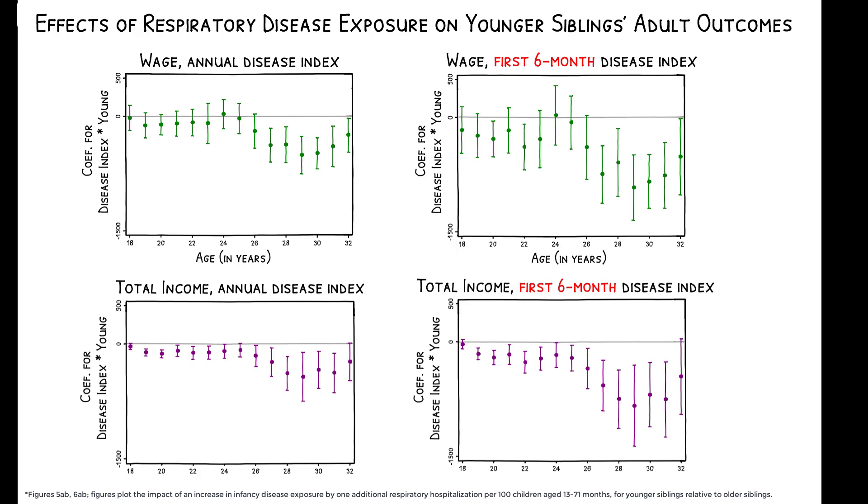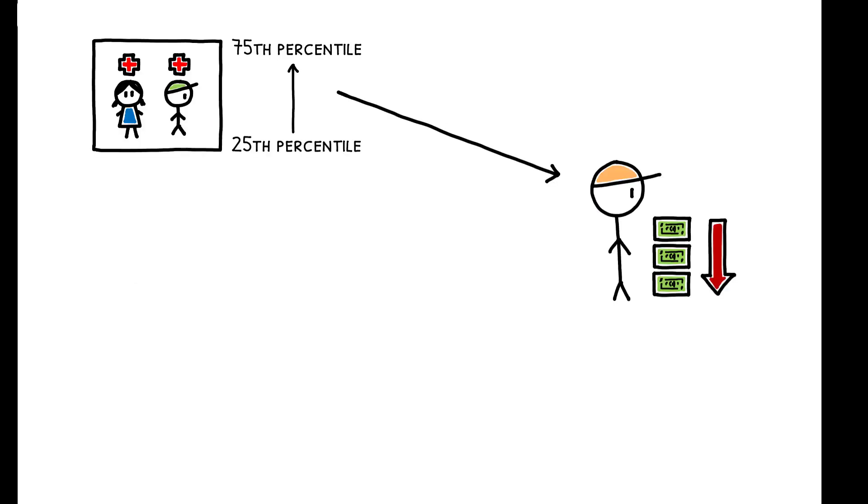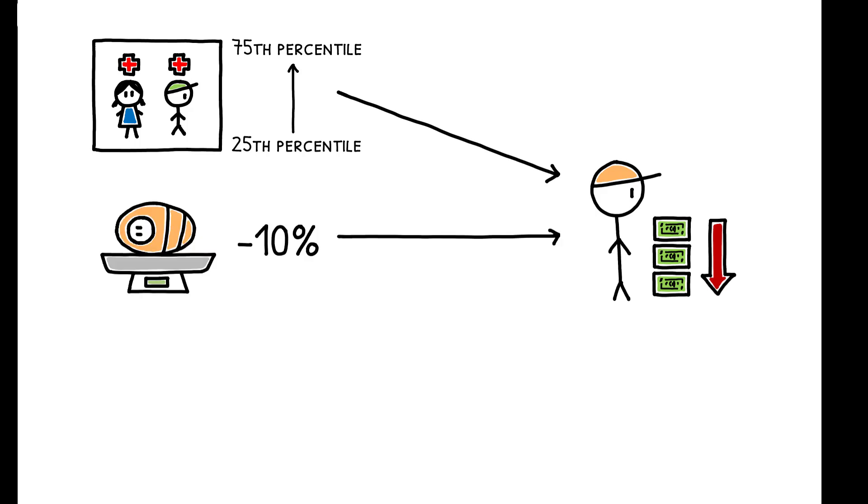To put these findings in context, the estimated earnings reduction associated with an interquartile increase in early respiratory disease exposure is similar to the effects of a 10 percent reduction in birth weight, or a 9 percent increase in ambient air pollution in one's year of birth, and are almost two-thirds of the impact of in-utero exposure to the 1918 Spanish flu pandemic.